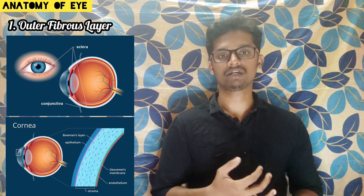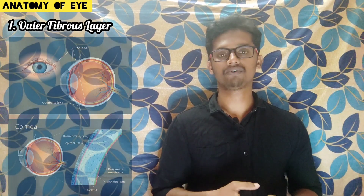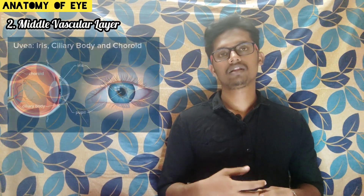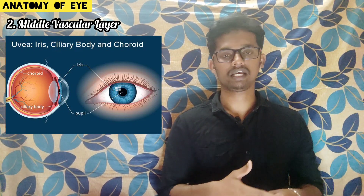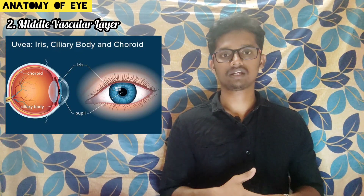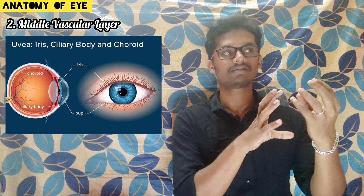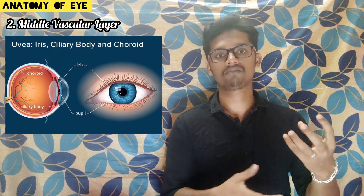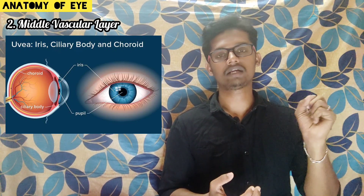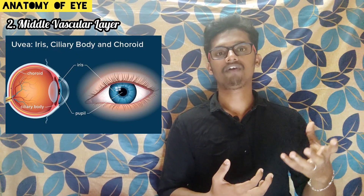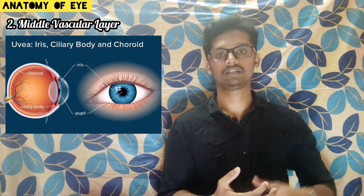Overall, the outer layer provides protection, the muscles are connected to it, and it is also responsible for the shape of our eye. Next, the second layer is the middle vascular layer. The first structure is the ciliary body, which provides relaxation and constriction of muscles, thereby altering the shape of the lens. Like the background defocus option in a camera, where the closest object is focused and the background is defocused — in our eye, the ciliary body is responsible for this by providing contraction and relaxation to shape the lens, helping in focusing or defocusing objects.